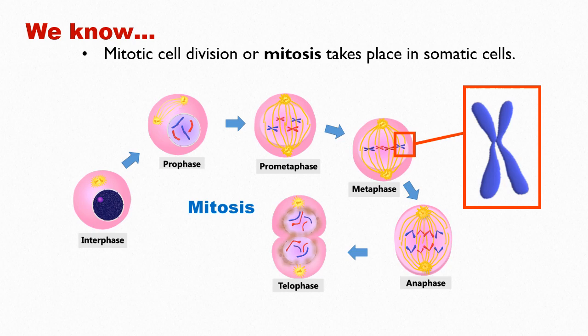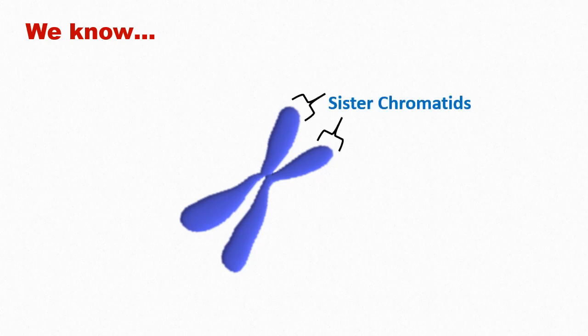Keep in mind that the structures of chromosomes in mitosis are actually representing the duplicated chromosomes. Each duplicated chromosome consists of two sister chromatids that are attached to each other along their lengths. The specific location at which sister chromatids are tightly attached to each other is called the centromere.